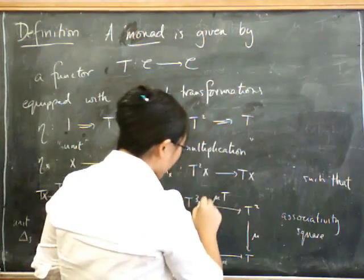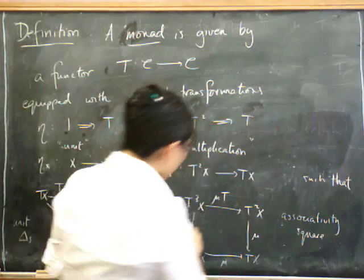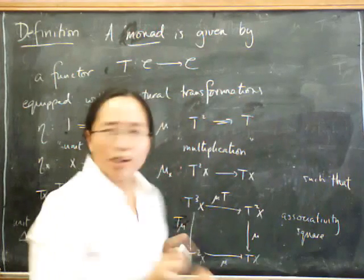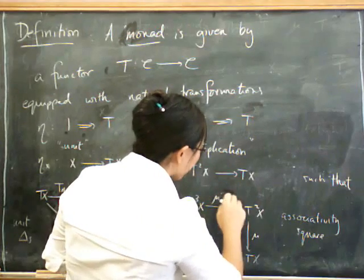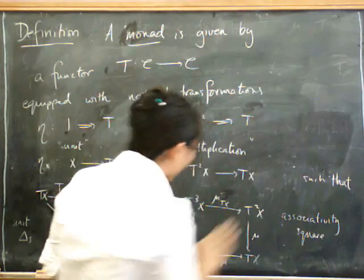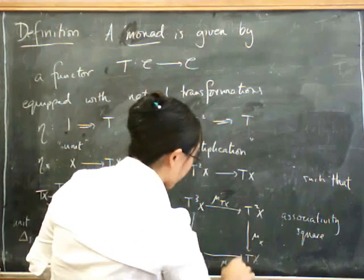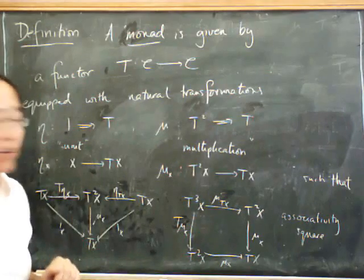And we can do the same thing to this one over here. We put x in everywhere. Oops, sorry. Now, oh, I did something wrong here. That was supposed to be the mu on the right. And nobody corrected me. So mu T, the component of x, is the component of mu at T of x. And this here is T of mu of x, and this is mu of x, and this is mu of x. So that is the definition of a monad.